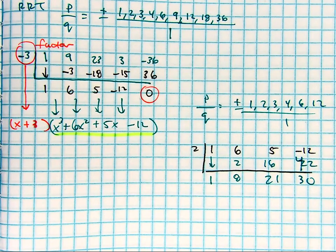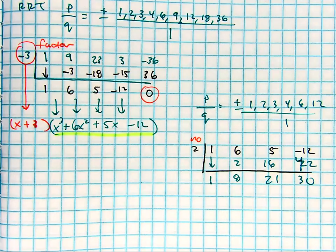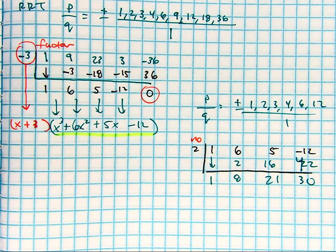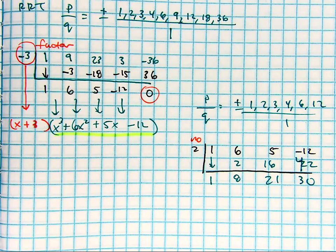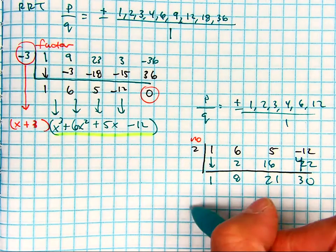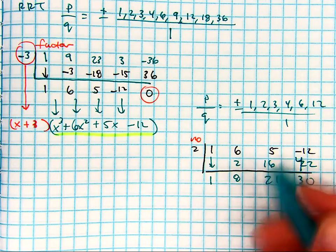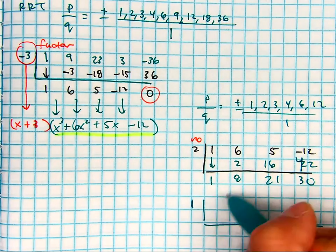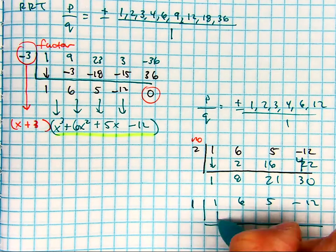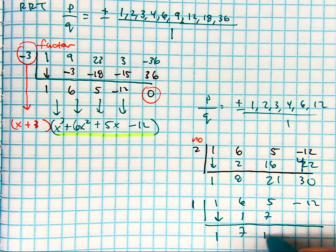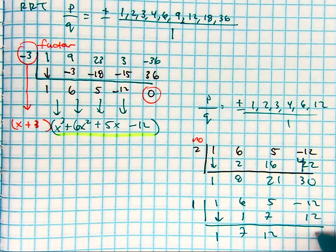So no, not a factor by the factor theorem. What number are you guys going to try now? 1? Let's try 1. 1, 7, 7, 12, 12, 0. Yay!